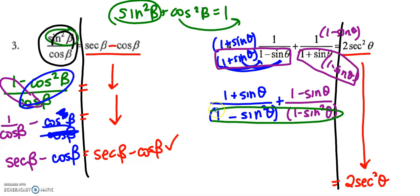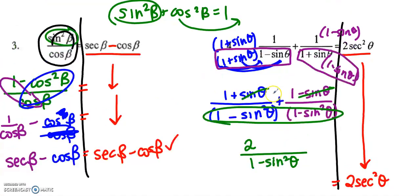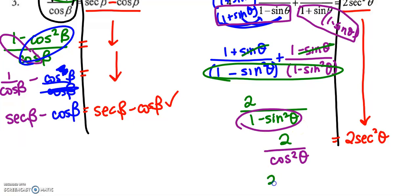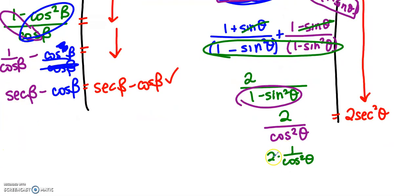Now that they have a common denominator, I can combine the numerators: one plus one is two, and sine minus sine cancels, so I get two over one minus sine squared. One minus sine squared equals cosine squared from our earlier example, so I have two over cosine squared. I can view this as two times one over cosine squared. Using reciprocal identities, one over cosine squared is secant squared, so my final answer is two secant squared — which is exactly what I wanted to show.